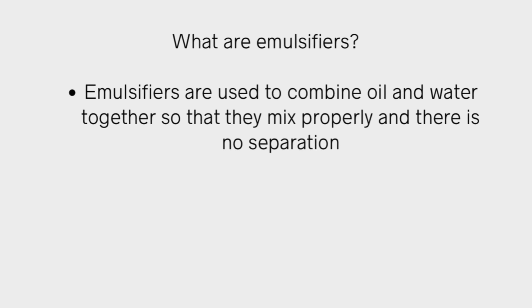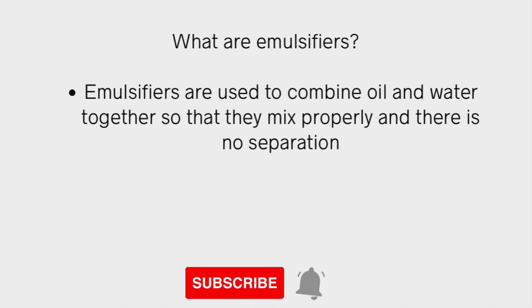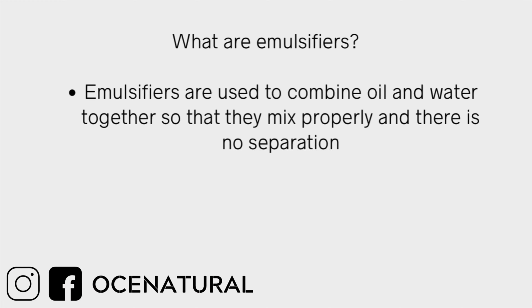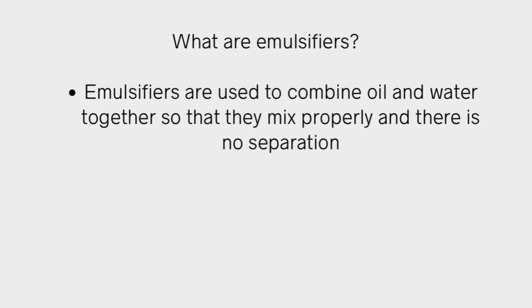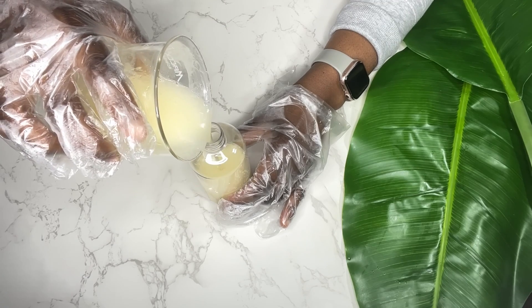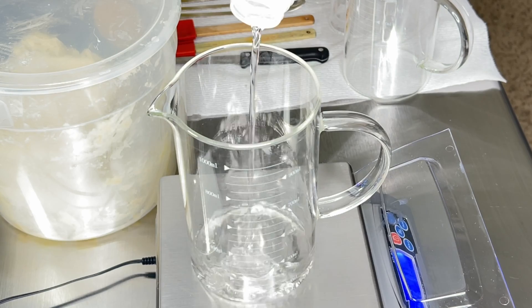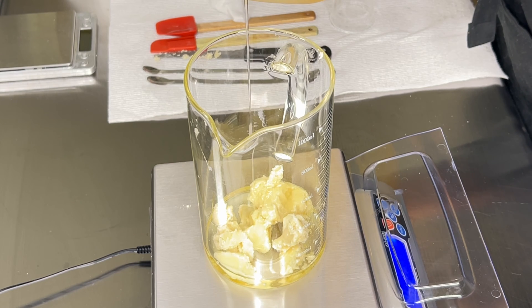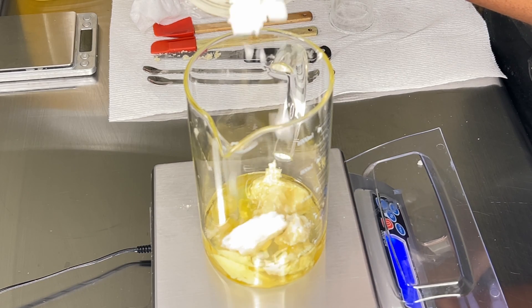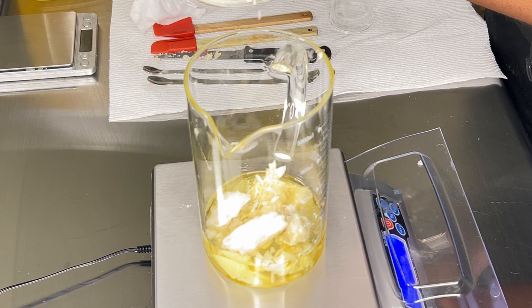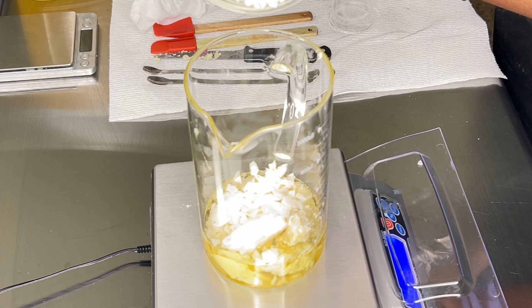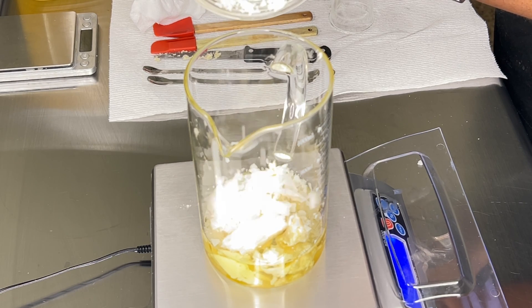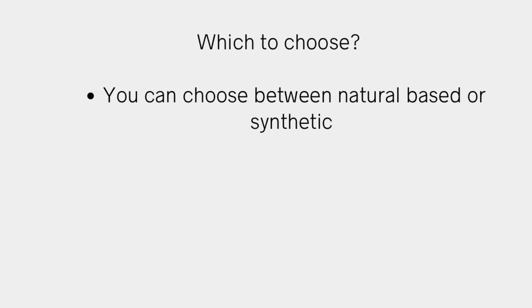What is an emulsifier? Emulsifiers are used to combine oil and water together so that you don't have separation in your finished product. Think about things like your lotions, creams, shampoos, body washes, face washes, and cleansers — anytime you're combining water-based ingredients with oil-based ingredients, you're going to need an emulsifier. If you choose not to use one, you'll have to shake the product every time because you will have separation.